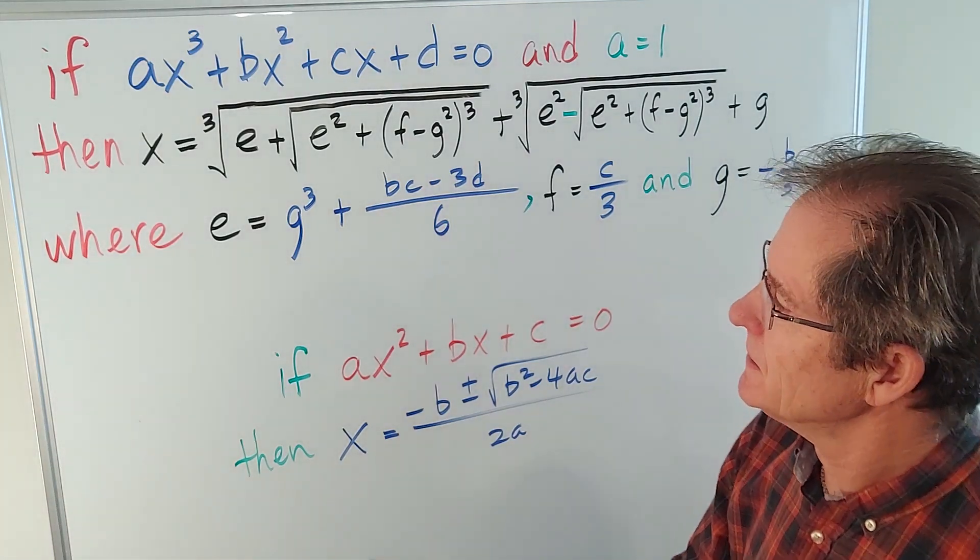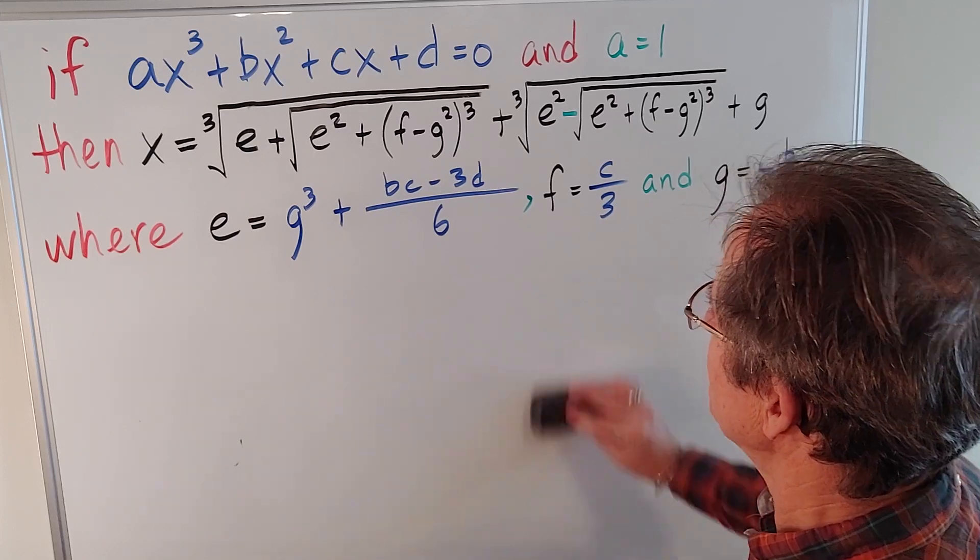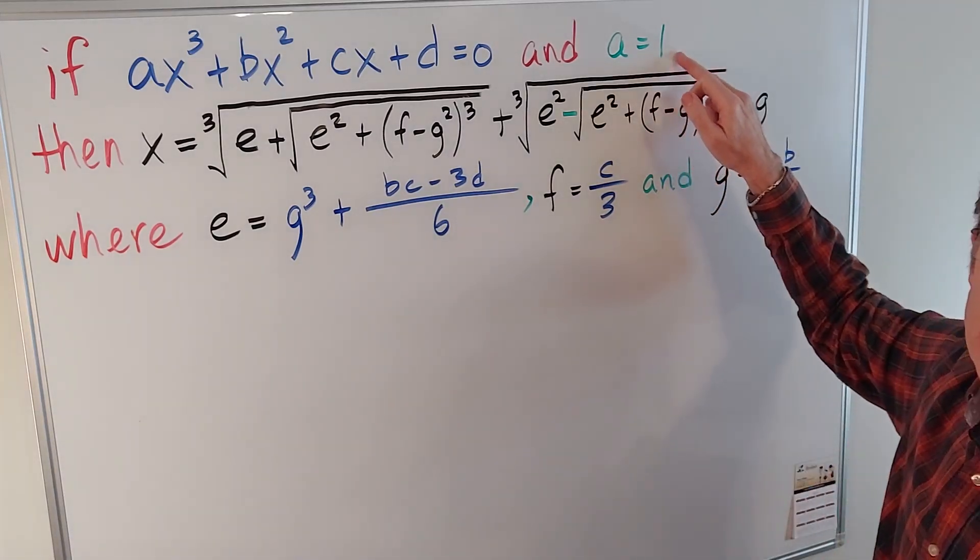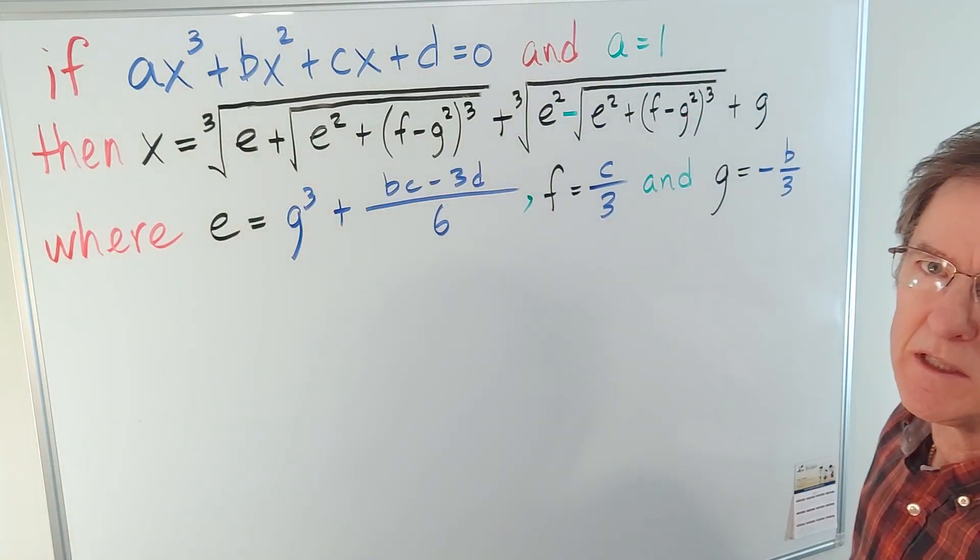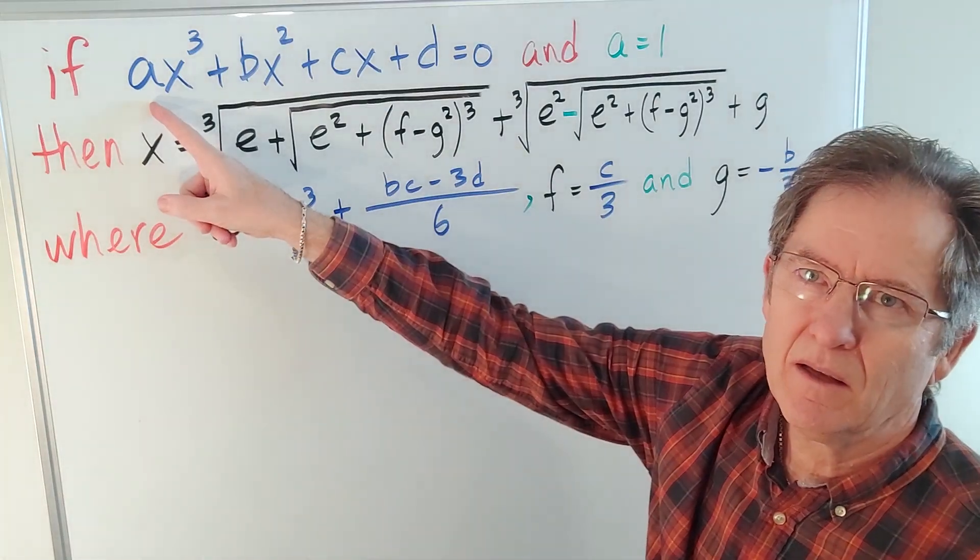But today I want to consider ax cubed plus bx squared plus cx plus d equals zero. And I'm also going to choose a equals one. That's not much of a restriction because you can always just divide by a and make it equal to one.